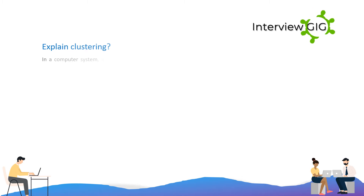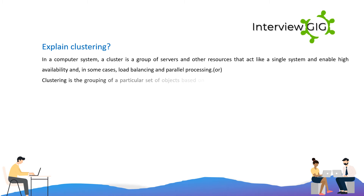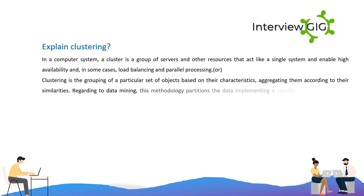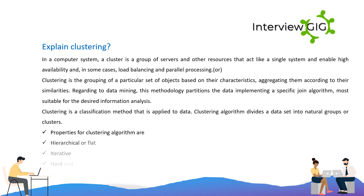Explain clustering. In a computer system, a cluster is a group of servers and other resources that act like a single system and enable high availability, and in some cases, load balancing and parallel processing. Alternatively, clustering is the grouping of a particular set of objects based on their characteristics, aggregating them according to their similarities. Regarding data mining, technology partitions the data implementing a specific join algorithm most suitable for the desired information analysis. Clustering is a classification method applied to data; a clustering algorithm divides a dataset into natural groups or clusters. Properties for clustering algorithms are: hierarchical or flat, iterative, hard and soft, and disjunctive.